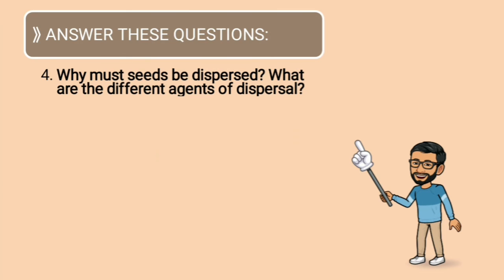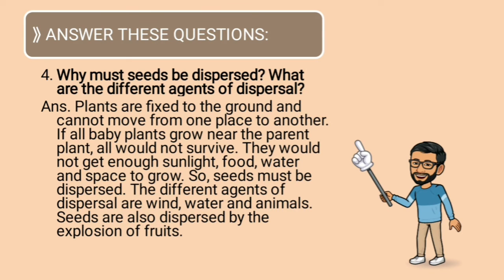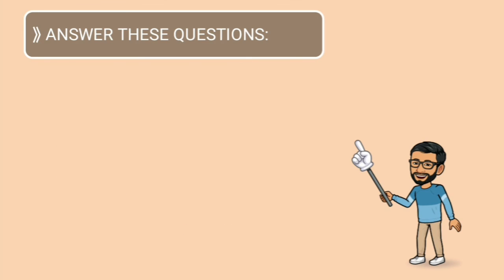Why must seeds be dispersed, and what are the different agents of dispersal? Plants are fixed to the ground and cannot move. If all baby plants grow near the parent plant, they would not survive — they would not get enough sunlight, food, water, and space. So seeds must be dispersed. The agents of dispersal are wind, water, animals, and explosion of fruits.